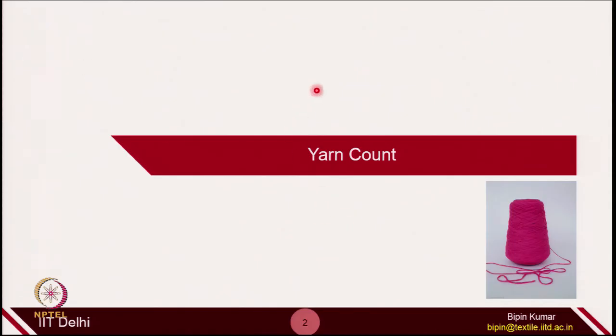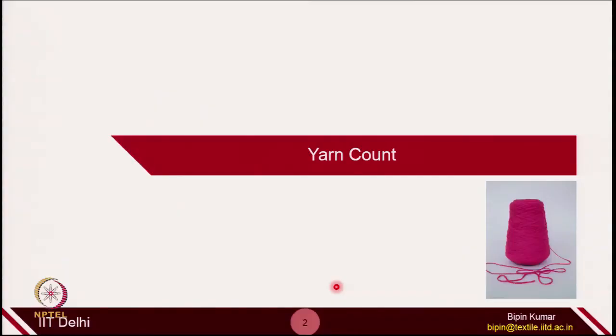Let's start with the first topic: selection of yarn. How do we select yarn for a particular machine or for a particular machine gauge? Since yarn is the key word here, first we will learn some basics about yarn and then move to what are the criteria and what are the relationships that exist for yarn selection on a particular machine. The first thing we need to understand is yarn count — it is a way to represent the mass per unit length of the yarn, i.e., the linear density of the yarn.